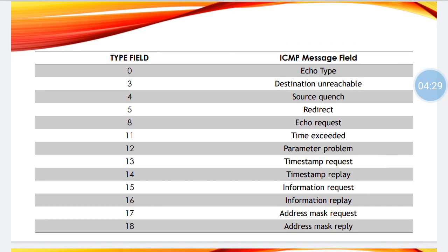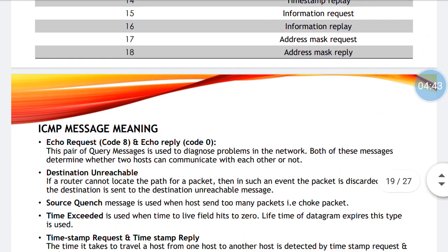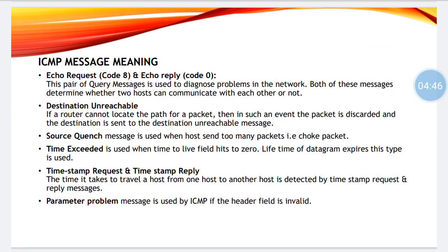This is the type field of ICMP messages. Remember, not all type fields are important — if you remember only four to five type fields, that is sufficient. Type field 0 is the echo message. Type field 3 is the destination unreachable message. Echo request has code 8, and echo reply has code 0. This pair of query messages is used to diagnose problems in the network and determines whether two hosts can communicate with each other. If an echo request message is sent and an echo reply comes from the receiver side, then they can communicate with each other.